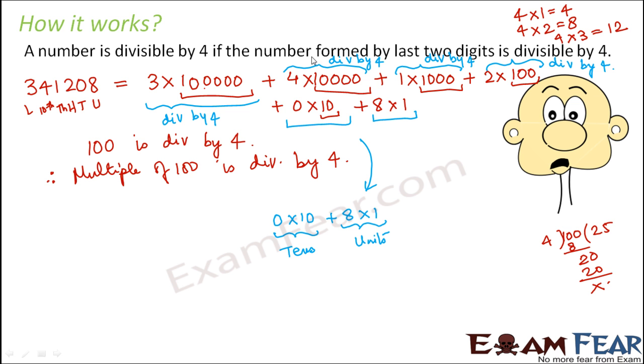And that is what we are doing. What we are saying is if the number formed by the last two digits is divisible by 4, because these last two digits are the ones which we are unsure of, which we are not sure.